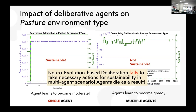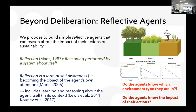What should we do? Beyond the deliberative layer, we propose building reflective agents — agents that can reason about their actions and, based on that reasoning, make choices. Reflection was first discussed by Pattie Maes; it is basically reasoning performed by a system about itself. We want these agents to reason about their actions and act accordingly. Reflection is a form of self-awareness where the agent becomes an object of its own attention, and learning and reasoning happen from within the system.